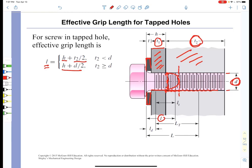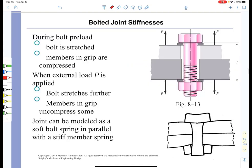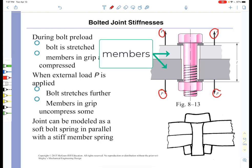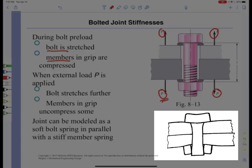When you preload a bolt member system and then we apply load to that member, it's natural to ask what the load is in the bolt. During the preloading phase before we apply this load P, the bolt is stretched and the members are compressed. When the external load P is applied, the bolt stretches a little bit further and members in the grip lose some of their compression.